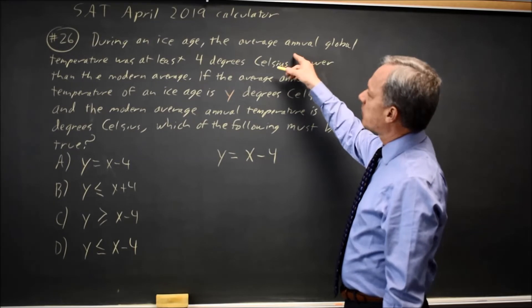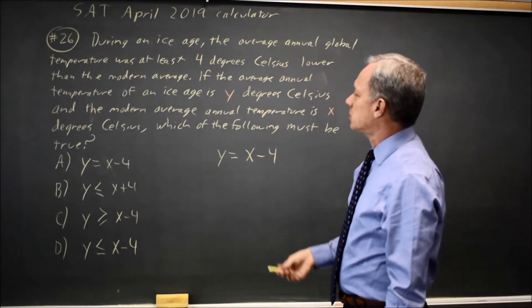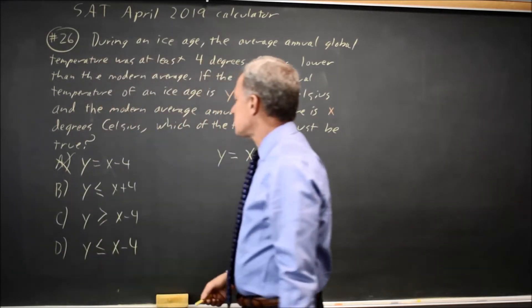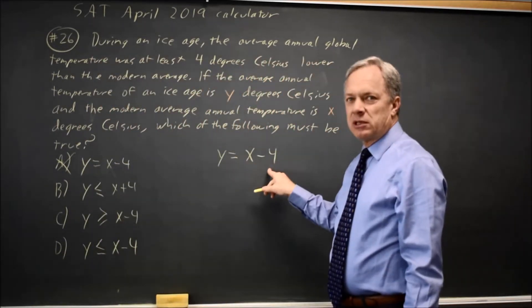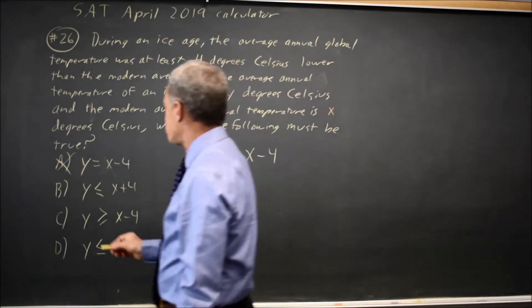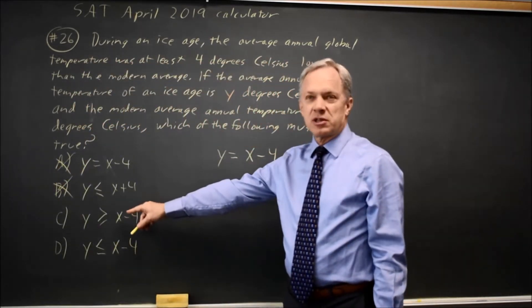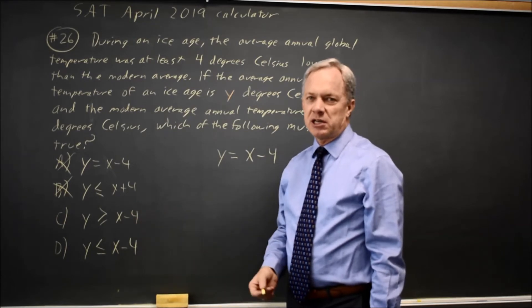But they said average temperature was at least 4 degrees lower, so it's not an equation. And since the inequality will have the same expressions, just a different symbol where the equal sign is, the X plus 4 is not correct. The question is whether this is Y greater than or equal to or Y less than or equal to.